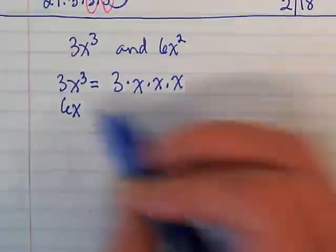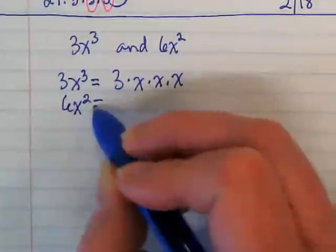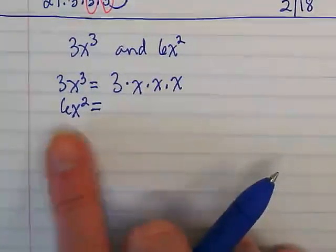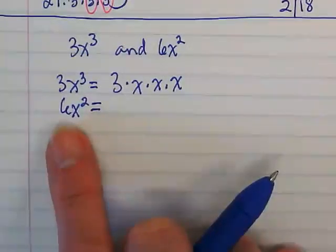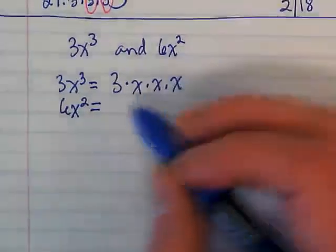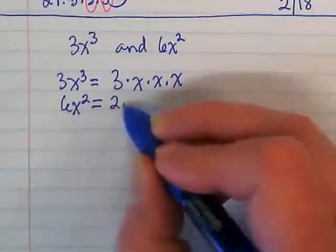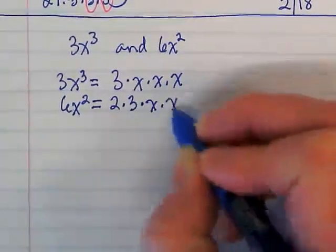Then I'm going to break up 6x squared. If this was 18 or 24, I might do a birthday cake, but it's just 6, and I know that the prime factors of 6 are just 2 and 3. So I'm going to do 2 times 3, and then 2 x's.